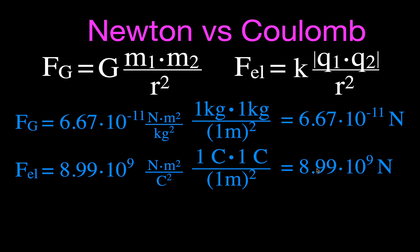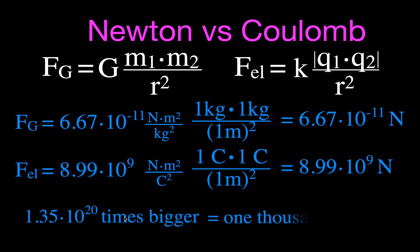If you take the ratio of the electric force to the gravitational force, you find that the electric force is 1.3 × 10²⁰ times bigger — that is actually a thousand trillion times larger. So the electric force is much stronger than the gravitational force. We often think gravity is very strong because falling hurts, but gravitational force is actually not that strong compared to the other elementary forces.